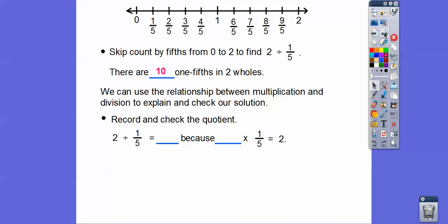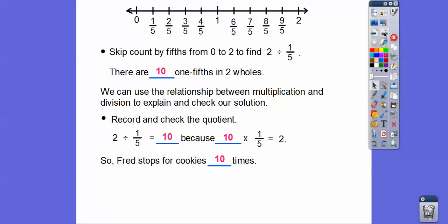We can use the relationship between multiplication and division to explain and check our solution. 2 divided by 1 fifth equals 10, because 10 times 1 fifth equals 2. So 2 divided by 1 fifth is equal to 10, because 10 times our divisor gives us what our dividend was. Fred stops for cookies 10 times.